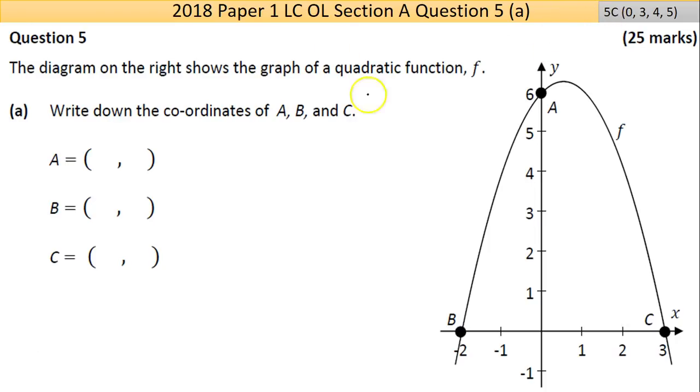This question here is about 5c. We're told the diagram on the right shows the graph of a quadratic function f. Always remember that with function notation, f(x) is the equivalent way or a different notation system for saying y. As you can see here, they're using y and x axis.